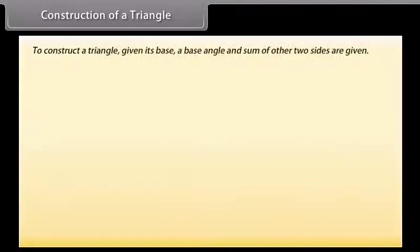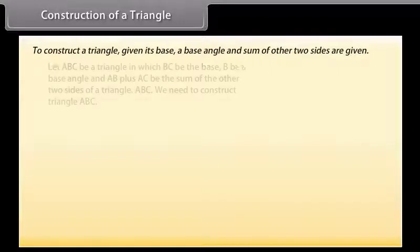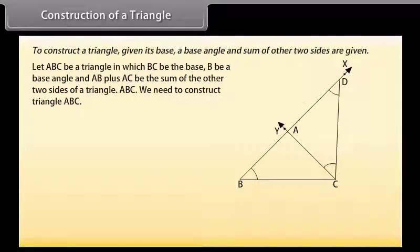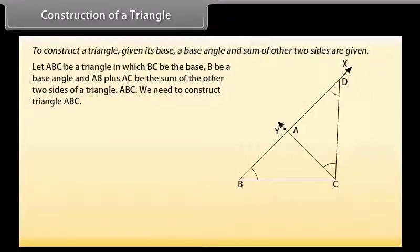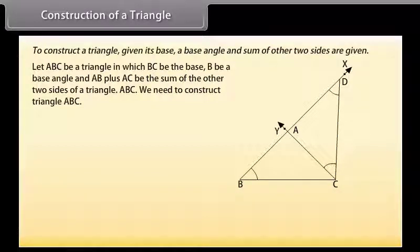To construct a triangle given its base, a base angle, and the sum of the other two sides: let ABC be a triangle in which BC is the base, angle B is the base angle, and AB plus AC is the sum of the other two sides. We need to construct triangle ABC.